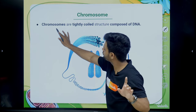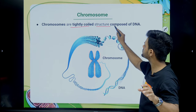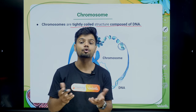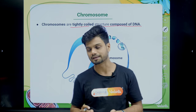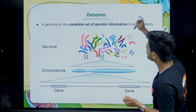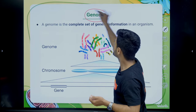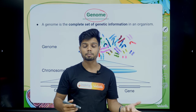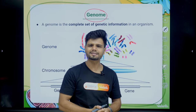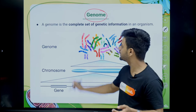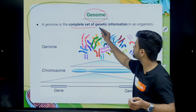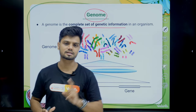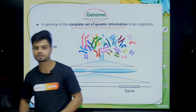What is a chromosome? Chromosomes are tightly coiled structures composed of chromatin. What is a genome? Genome is nothing but a complete set of genetic information. The complete genetic information inside an organism is called the genome.